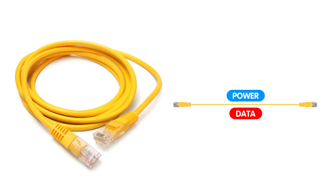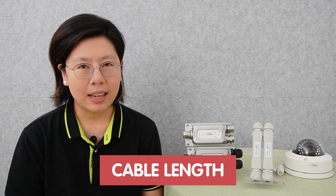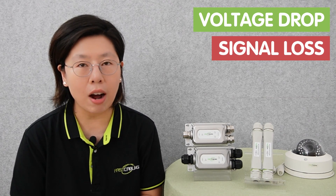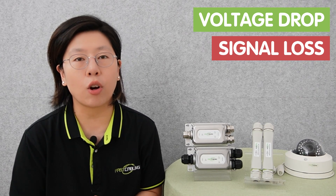Power over Ethernet technology merges power and data transmission over a single Ethernet cable. However, a common constraint faced by PoE IP cameras resides in cable length. PoE operates on a standard limitation where the signal's integrity diminishes beyond 328 feet, 100 meters. This restriction stems from voltage drop and signal loss over extended cable lengths, limiting the distance a camera can be placed from the PoE switch or PoE injector.